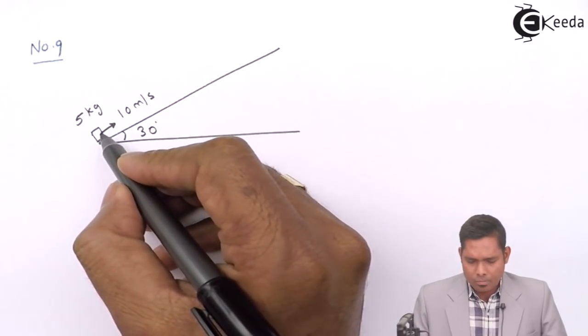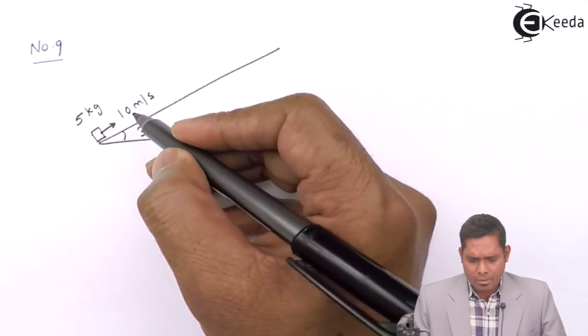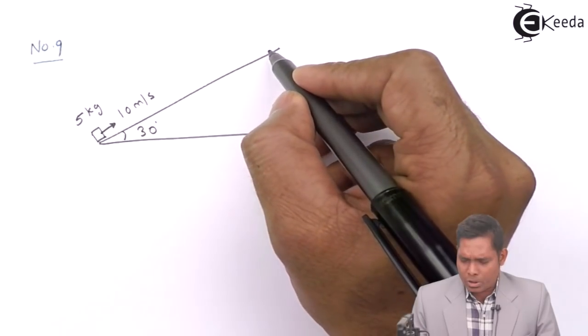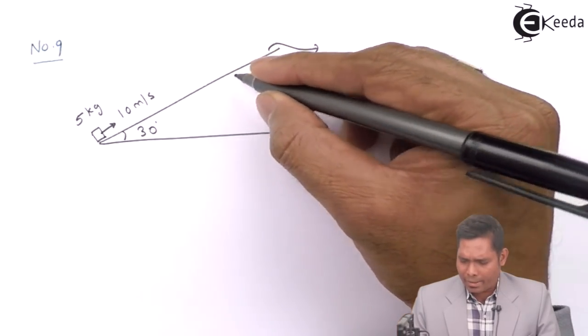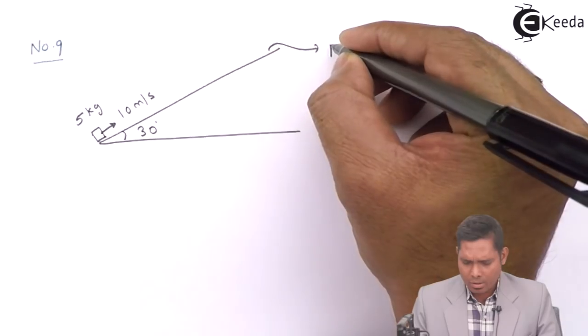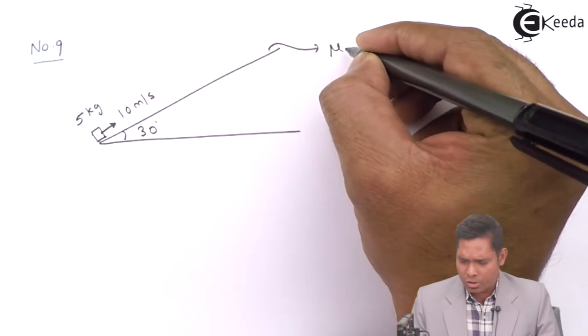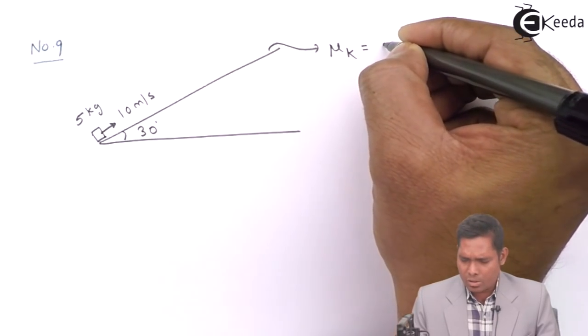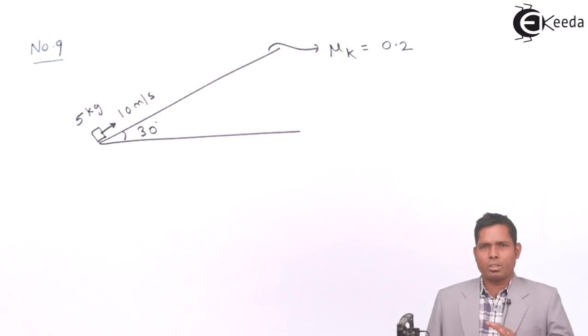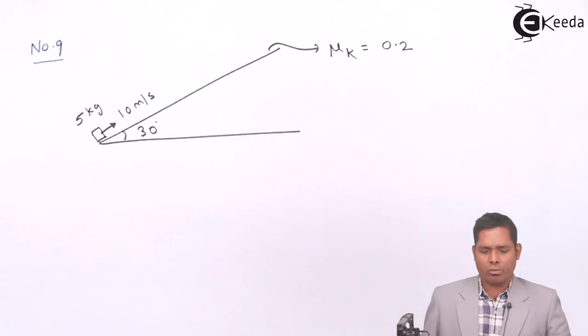From the bottom, the coefficient of friction between the block and the surface, that is the coefficient of kinetic friction, is given as 0.2 because the body is in motion, so kinetic friction applies.